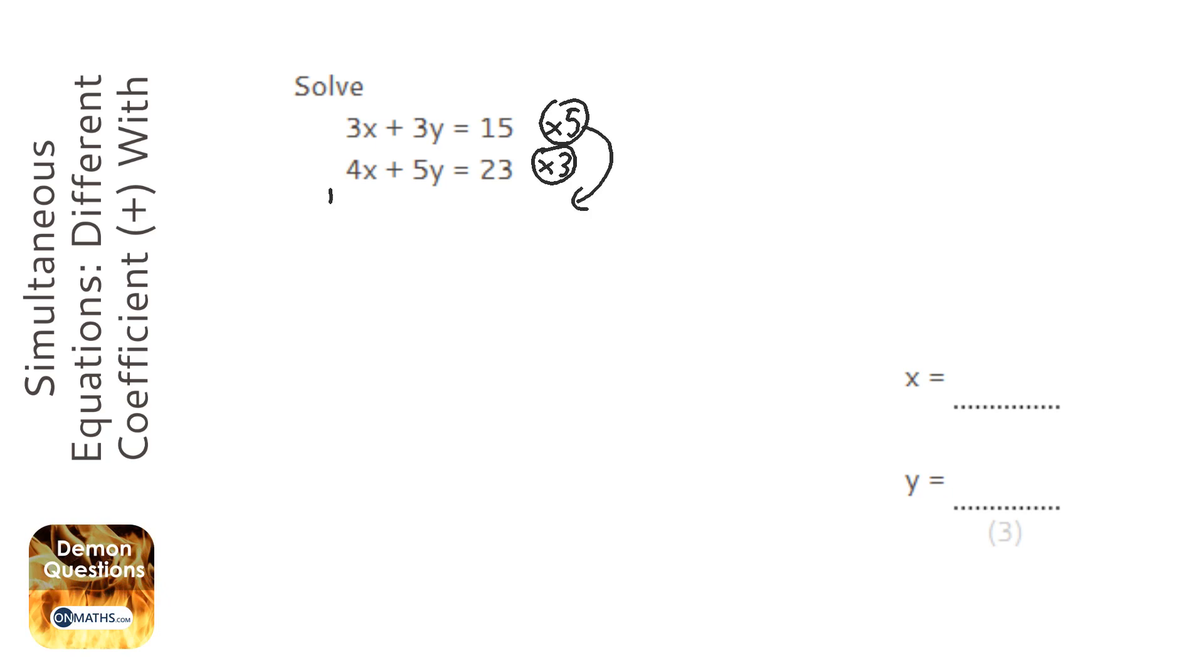So it's times top one by 5 and we get 15x plus 15y equals 75, and then this one becomes 4 times 3, which is 12x plus 15y and then equals 69.